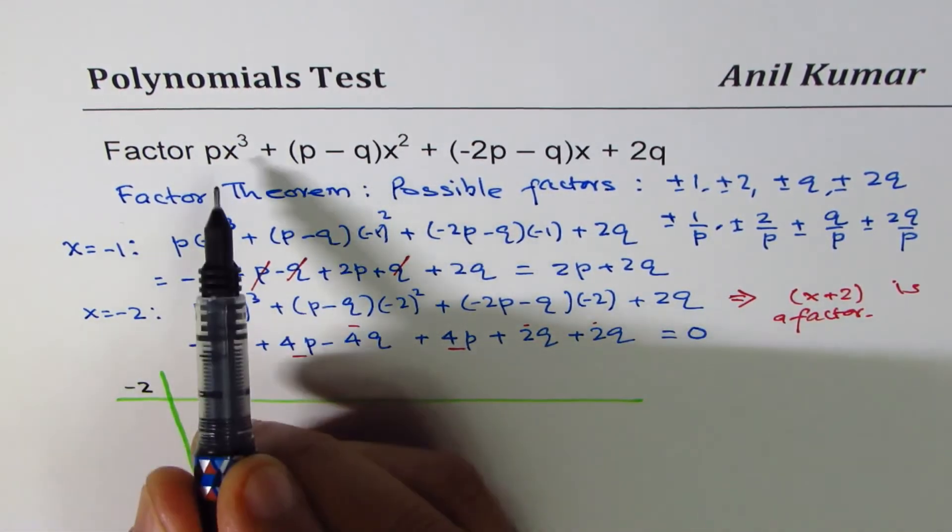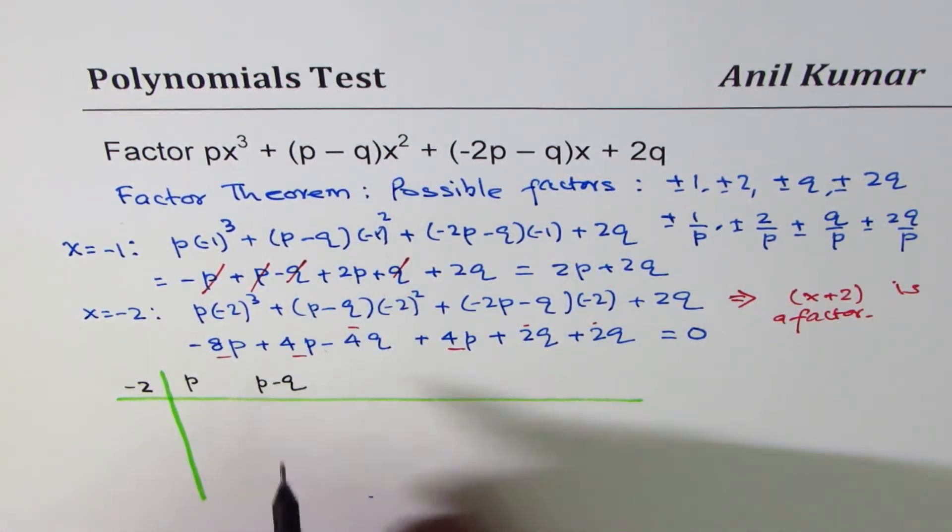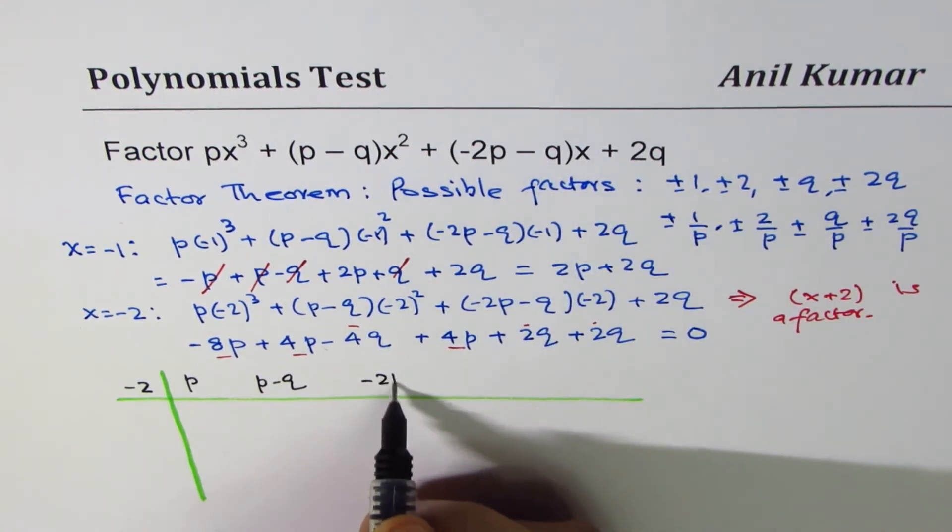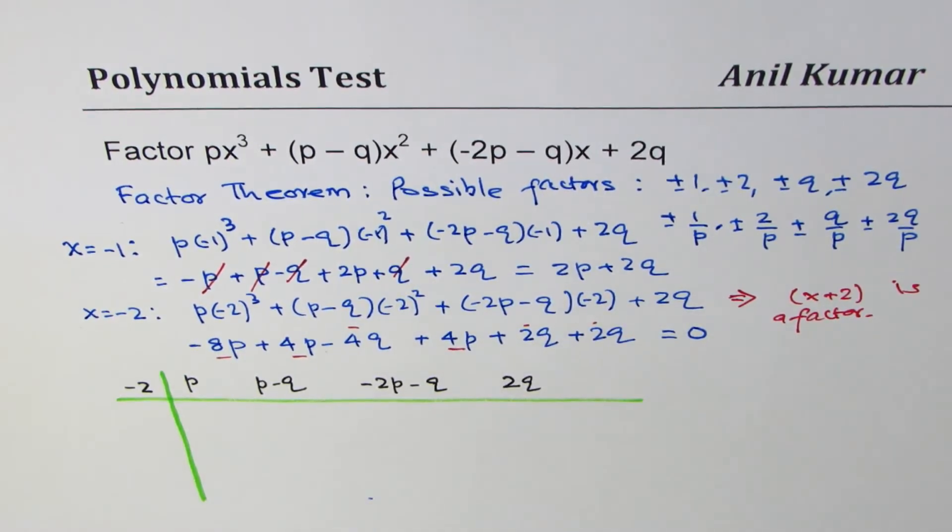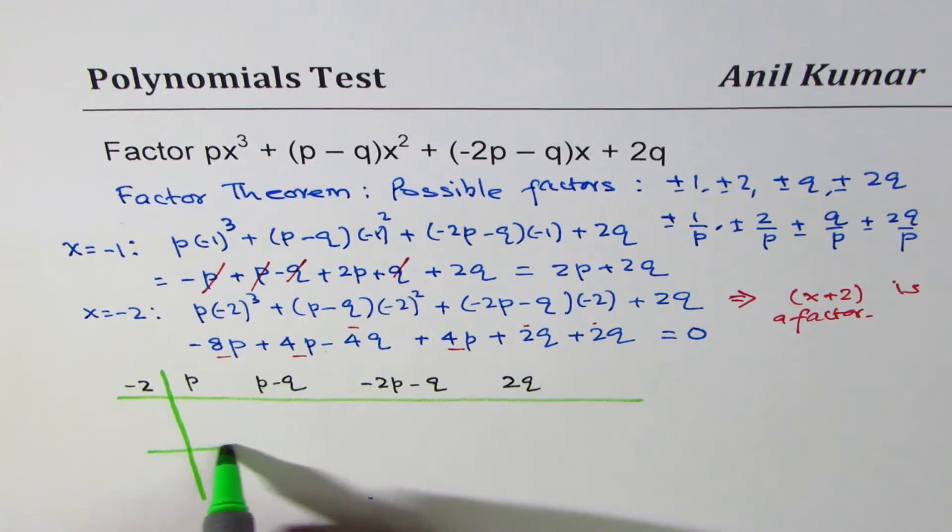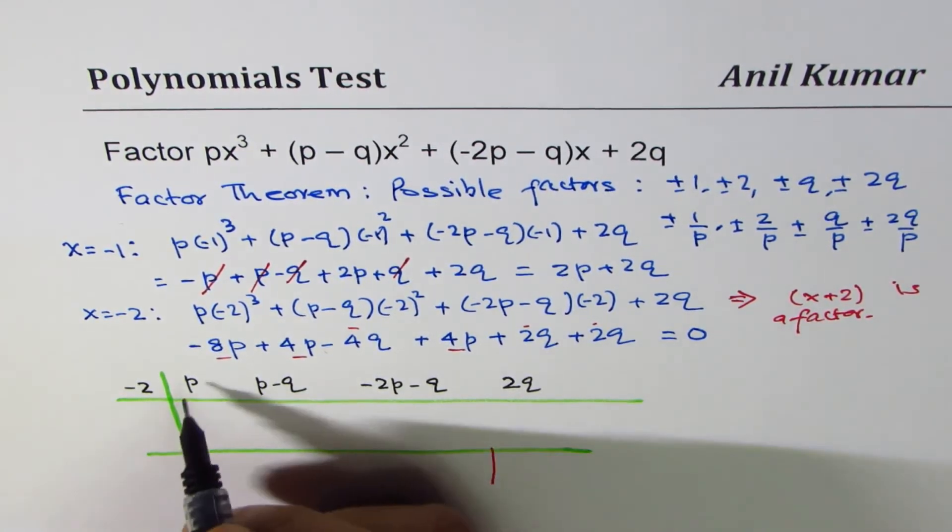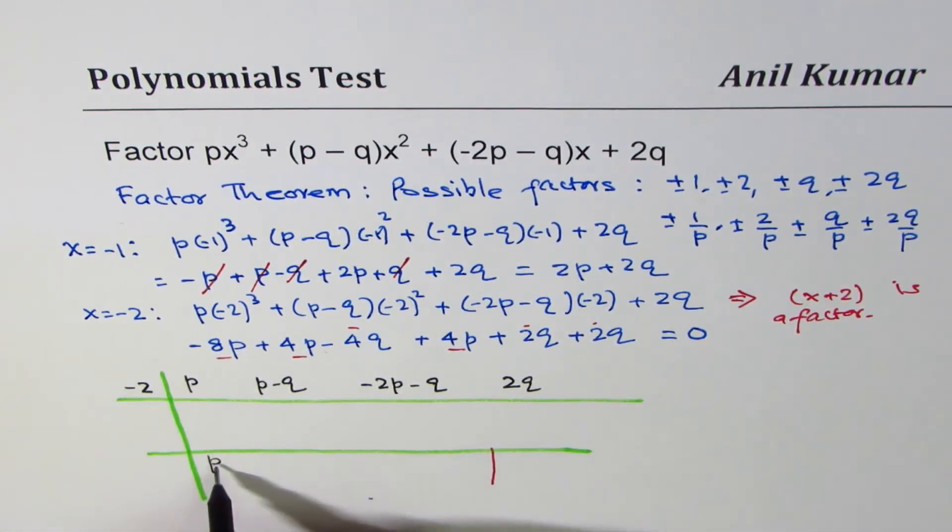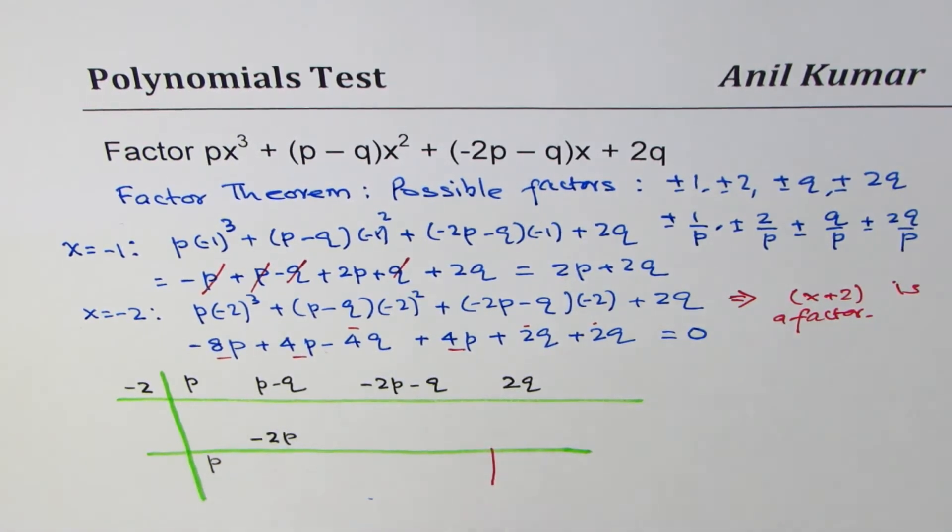So we'll write -2 here. The coefficient of x³ is p. x² is (p - q). For x, it is (-2p - q). And then we have the constant 2q. As you know, the leading coefficient will be brought down as such. So here we are going to get the remainder. So if I bring down p, multiply by -2, I get -2p. And when we add them up, we get (-p - q).